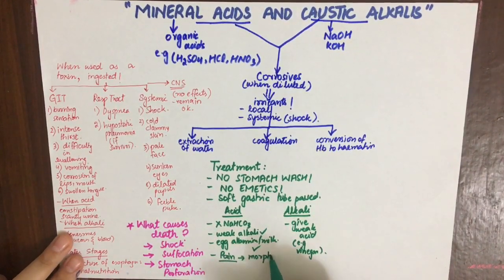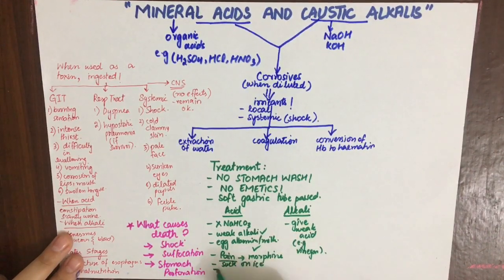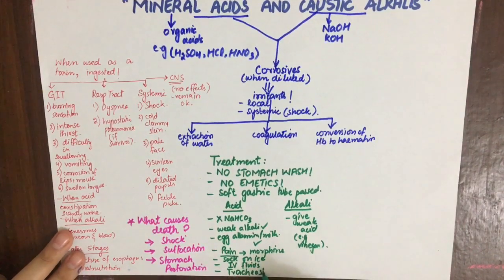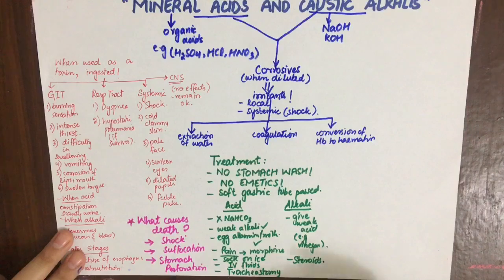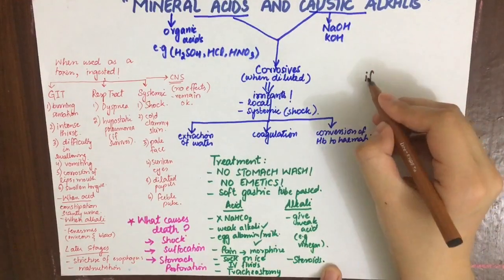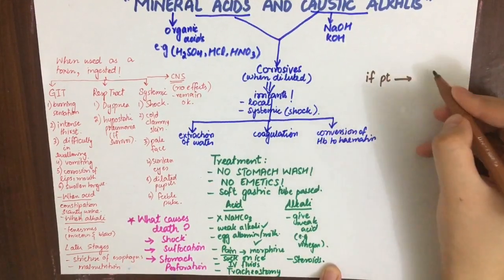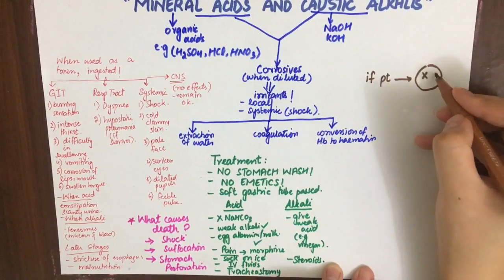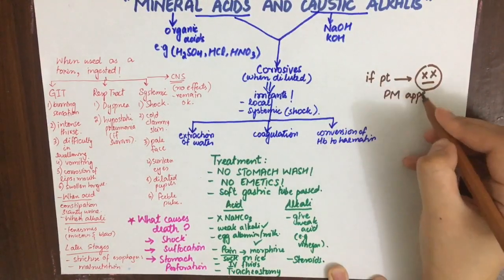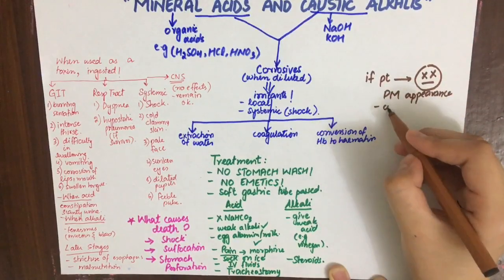When an alkali is used as a poison, weak acid such as vinegar is given. For pain relief, morphine is given. To relieve thirst, ice sucking and IV fluids are administered. Steroids are given for shock and to prevent esophageal stricture. Tracheostomy is performed to keep the patient breathing if edema of the glottis is significant.